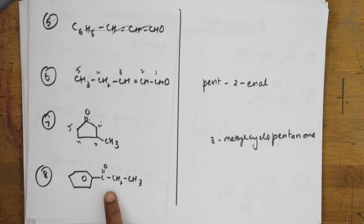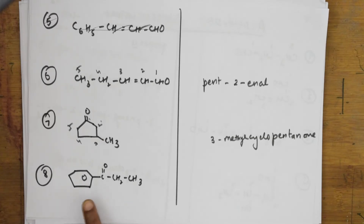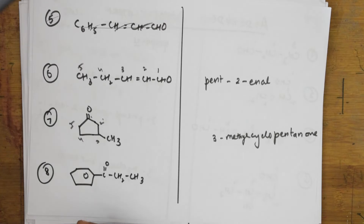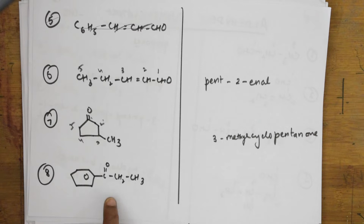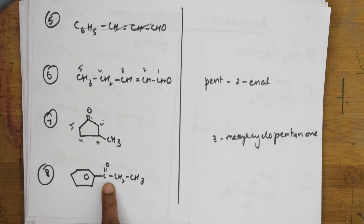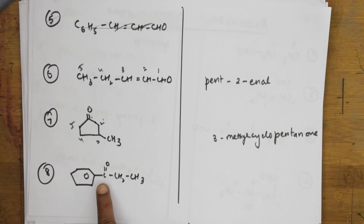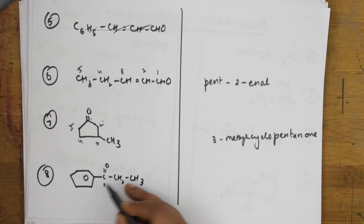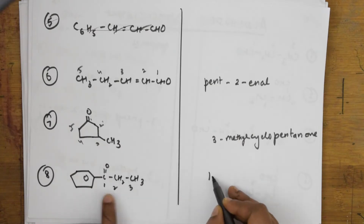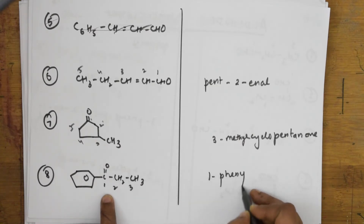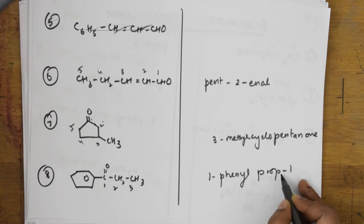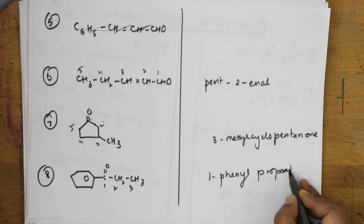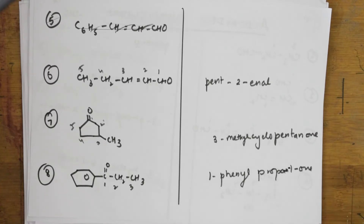Coming back to this ketonic compound — phenyl groups, alkyl groups, and halides should all be taken as substituents. So when you have this ketonic group, give it first preference: one, two, three. On one side you have a phenyl group, so this is phenyl-propan-1-one — 1-phenylpropan-1-one.